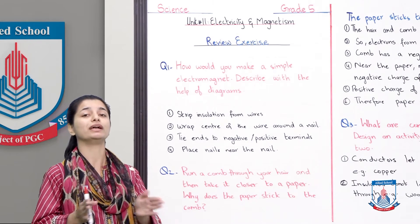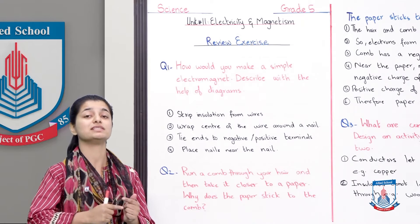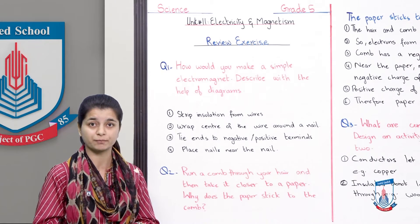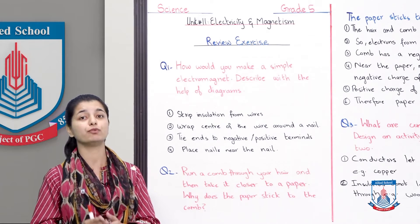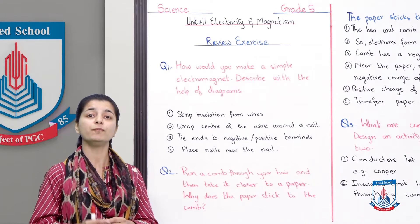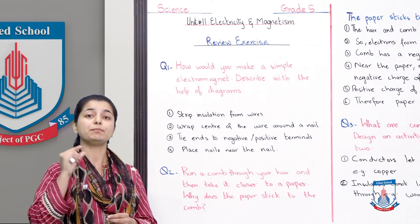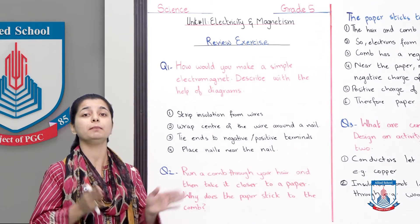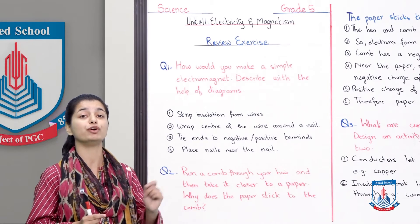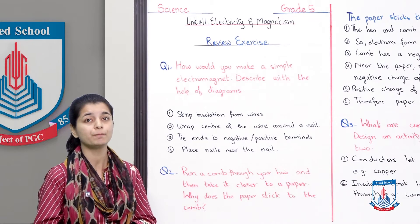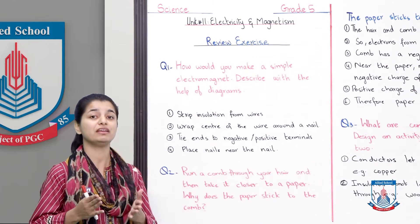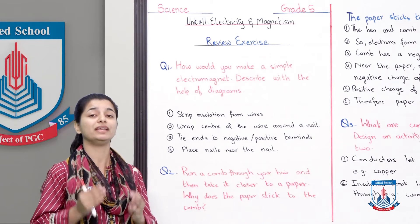When both ends are attached, current begins to pass through. Now all you have to see is whether the electromagnet is working or not. To test it, you bring paper pins, nails, or other small metal objects close to the electromagnet. If they are being attracted, that means your electromagnet is perfectly fine and working properly.